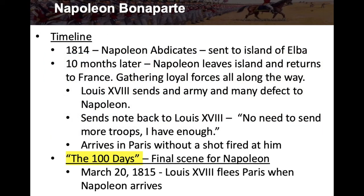Ten months later, Napoleon leaves Elba and returns to France, gathering loyal forces along the way. Louis the 18th, the monarch in France, sends an army to stop Napoleon, but many of his soldiers defect and join Napoleon instead. Napoleon sends a note back to Louis the 18th: 'No need to send more troops. I have enough.' He shows up in Paris and takes control of the country again without even a shot being fired.